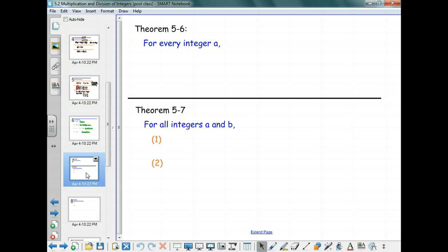Theorem 5.6 talks about integers and integer a, and it tells you that if you have negative 1 times an integer a, this actually equals the opposite or the negation of a.